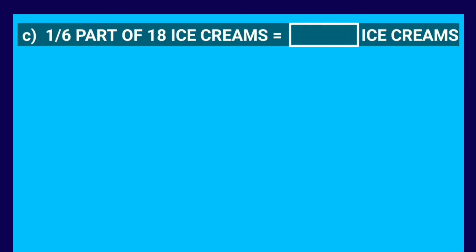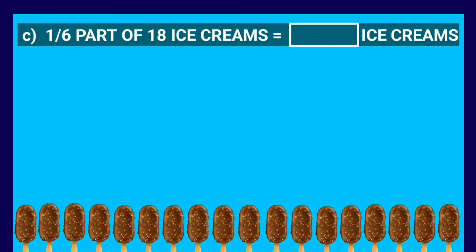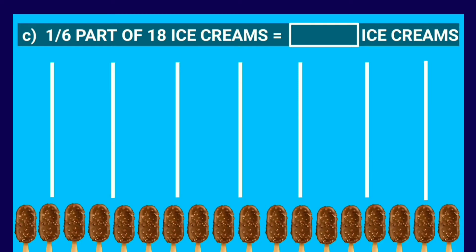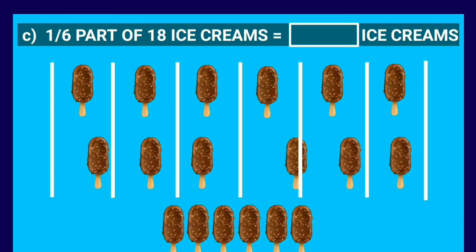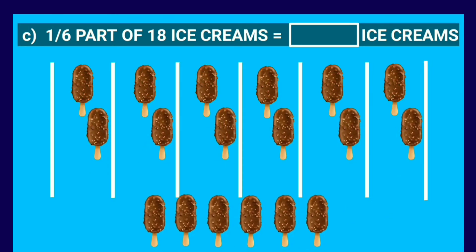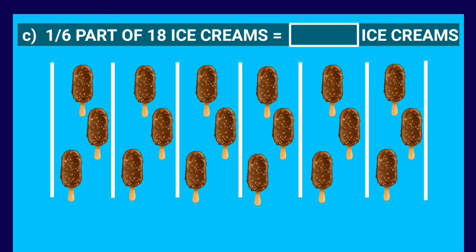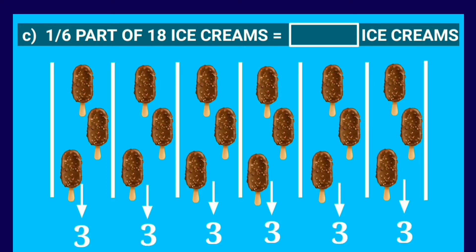Now we'll solve Part C of question 3: find 1/6 of 18 ice creams. We have 18 ice creams and will divide them into 6 equal parts using 6 columns. We place 1 ice cream in each column, repeating the process 3 times. This way we have divided 18 ice creams into 6 equal parts, and each part contains 3 ice creams.